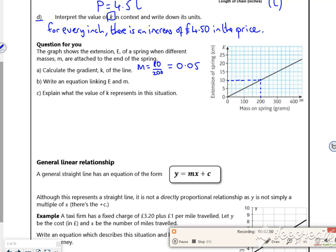An equation, so what have we got? So we've got E is 0.05m. Explain what the value of k represents. So for every gram, there's an increase of 0.05 cm. Something like that. As long as it's in context and makes sense, it's all okay.